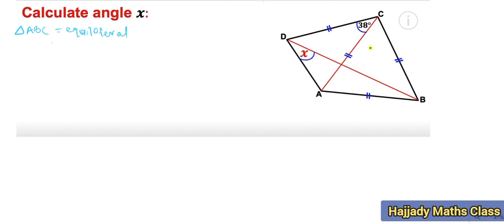Since it is an equilateral triangle, each angle is going to be 60 degrees. This angle is 60 degrees, this one is also 60 degrees, and this one also equals 60 degrees, because the total angle in a triangle is 180 degrees and these three angles add up to 180 degrees.